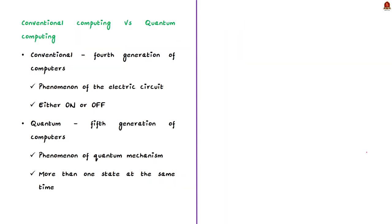Here the basic difference is what we just saw. Conventional computers are the fourth generation of computers. In this computing, the classical phenomenon of the electrical circuit is used. According to the phenomenon, there is only one state at a time, which is either on or off. At the same time, quantum computing or quantum computers are the fifth generation of computers. The phenomenon of quantum mechanism is used. According to this phenomenon, there can be more than one state at the same time.